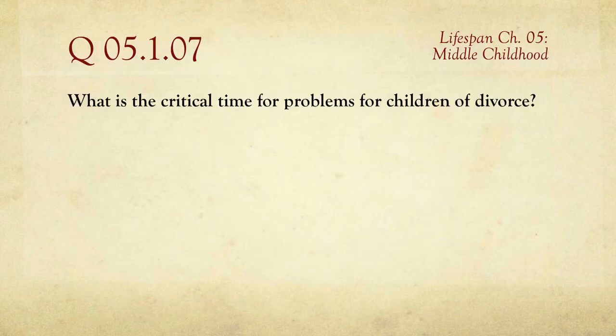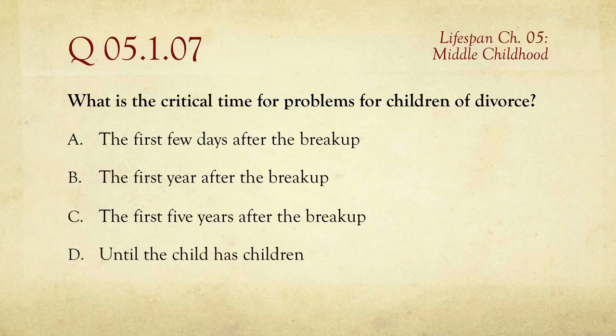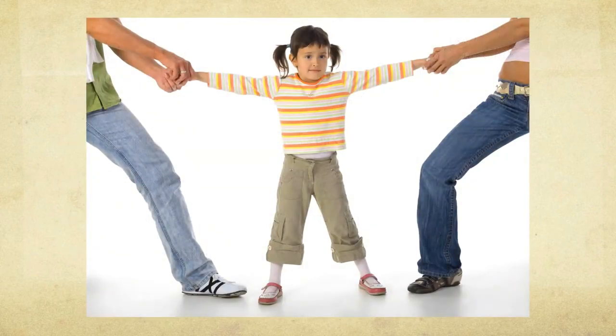Question number seven: what is the critical time for problems for children of divorce? If your parents get divorced, what's the most important time to pay attention? The choices are the first few days, the first year, the first five years, or until the child has children. The research indicates that the first year is particularly important — not just the first few days, but the entire first year.